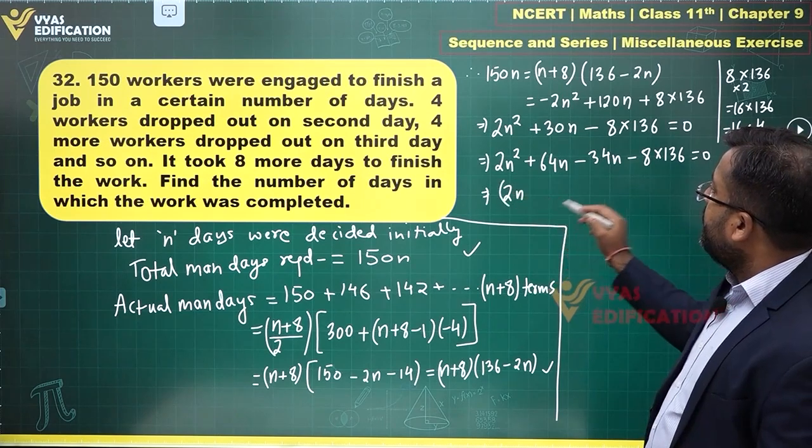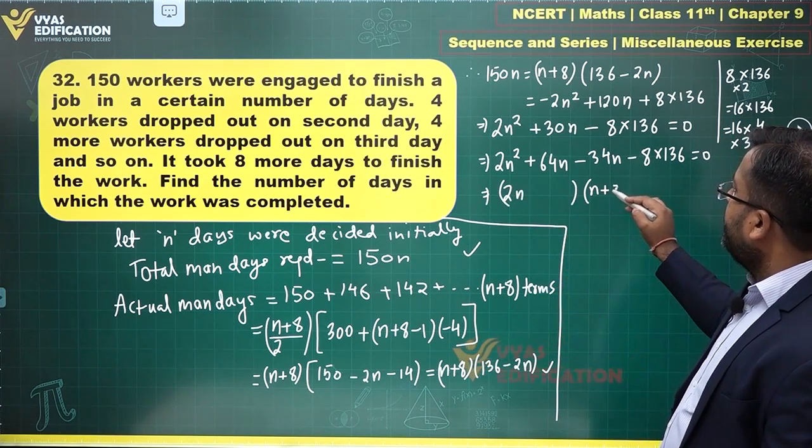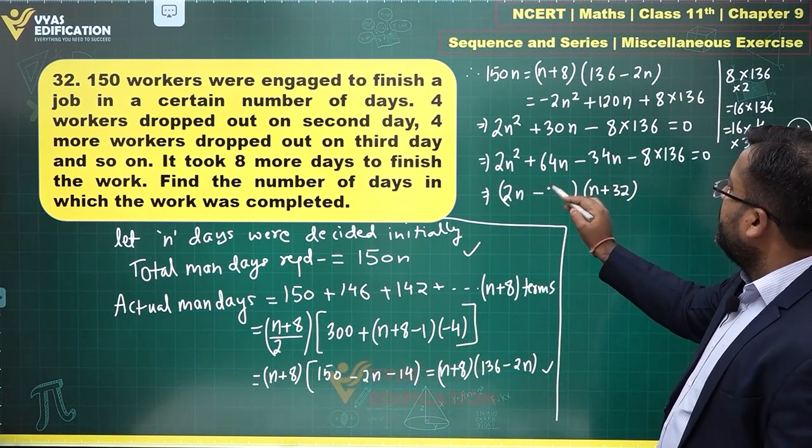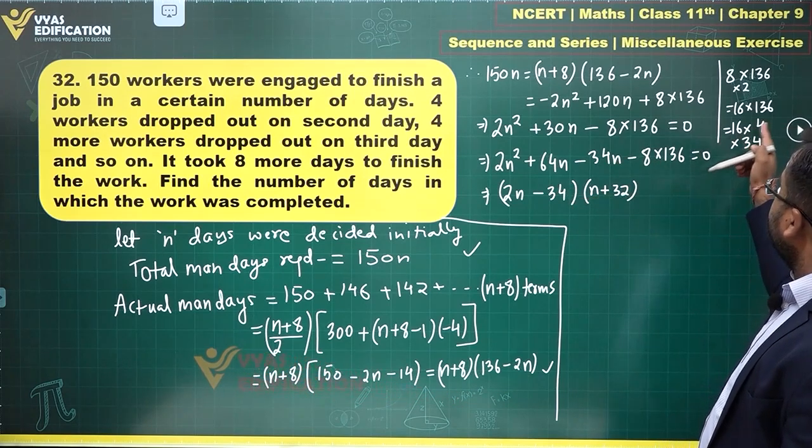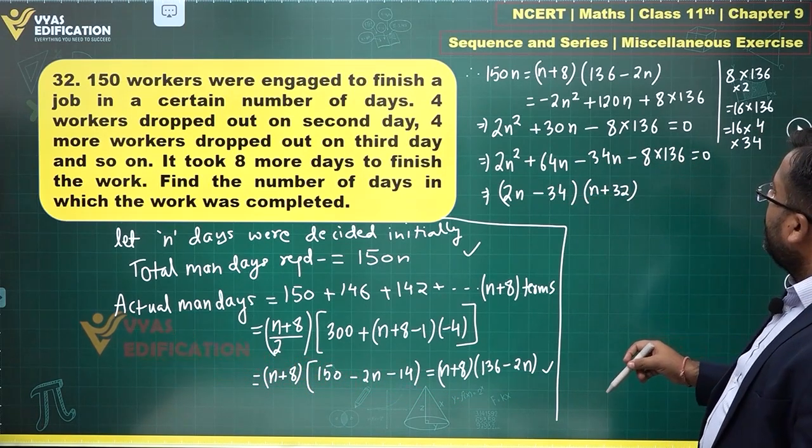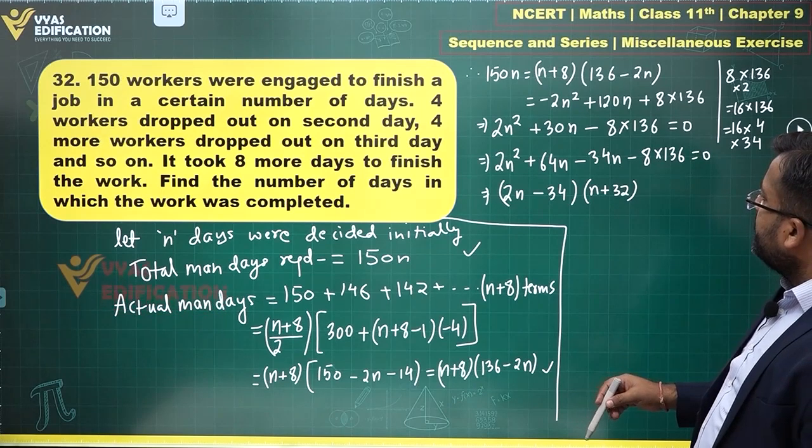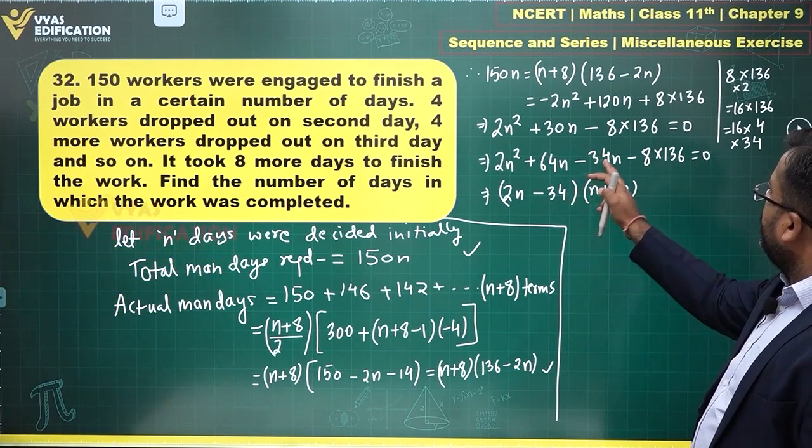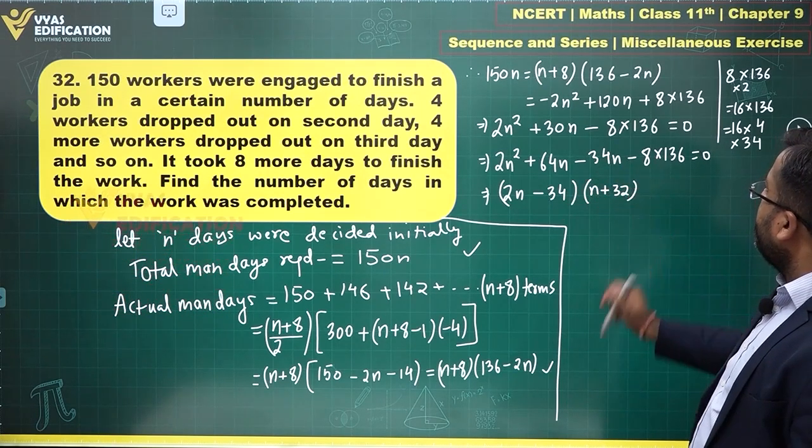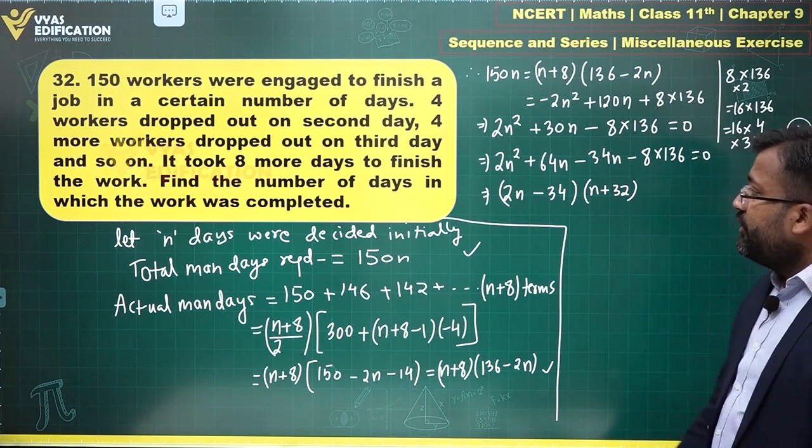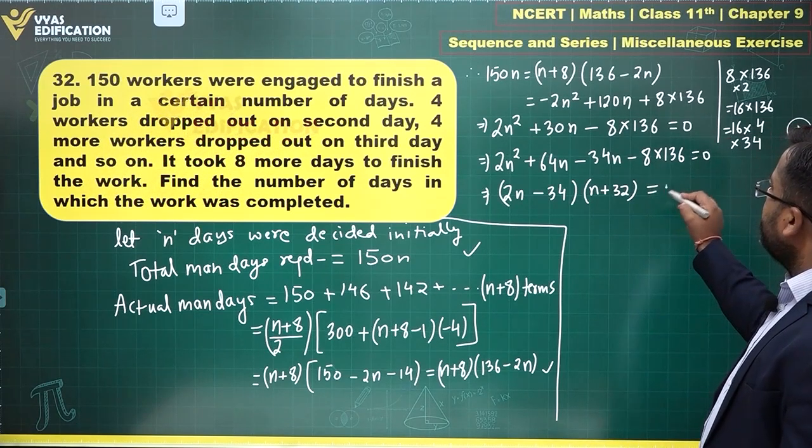2n will come out common from here. What remains is n plus 32. Minus 34 will come out common from here. 16 into 4 is 64. Will remain. Or 34, 34 comes out common. N plus 32 remains. Yes, 32 will remain. Not 64. 32 will remain. This is what you get. This is equal to 0.